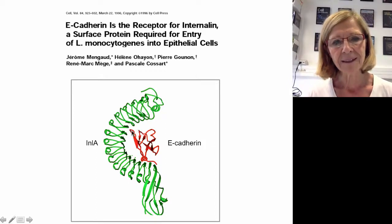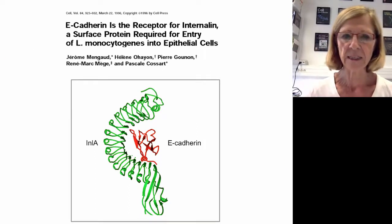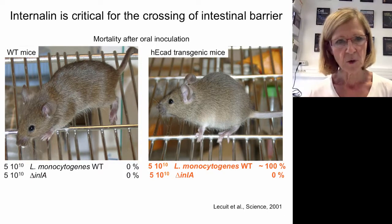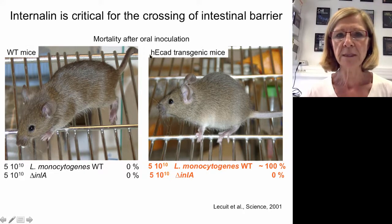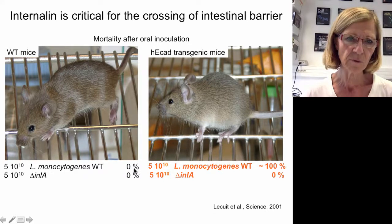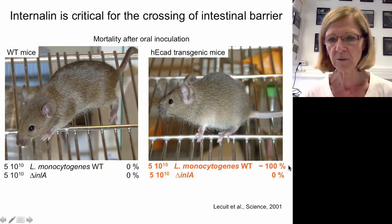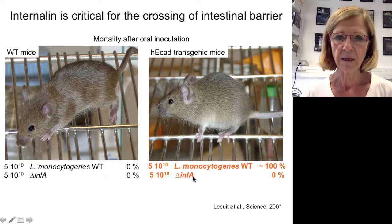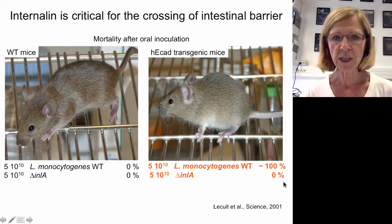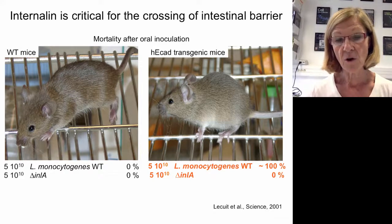We showed that internalin interacts with human E-cadherin but not mouse E-cadherin, although they differ at only one critical position. To address the role of internalin and E-cadherin, we expressed human E-cadherin in the mouse and infected transgenic mice to decipher the role of the InlA–E-cadherin interaction. In wild-type mice infected with 5×10^10 bacteria there is 100% mortality, and the same is true with the internalin mutant. In human E-cadherin transgenic mice, the wild-type bacteria cause 100% mortality, but the internalin mutant causes no mortality — demonstrating that this interaction is critical for successful infection.